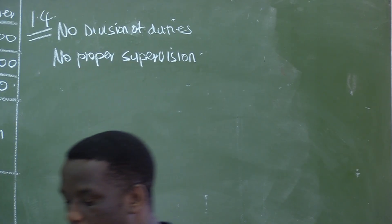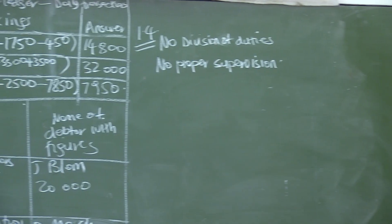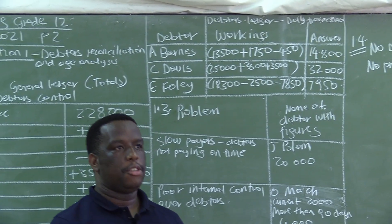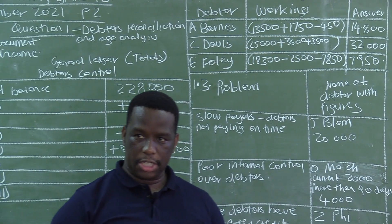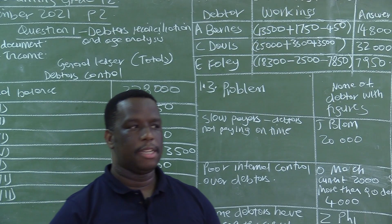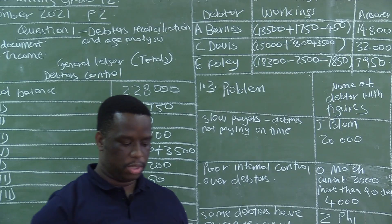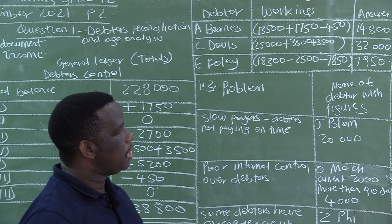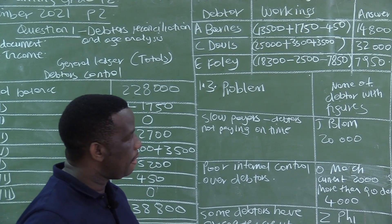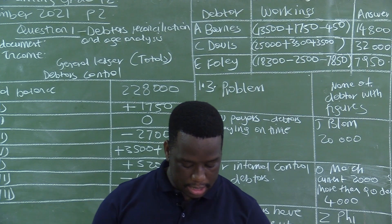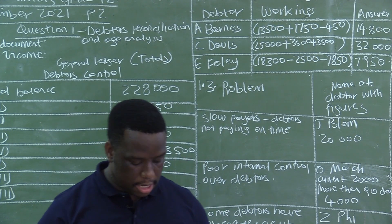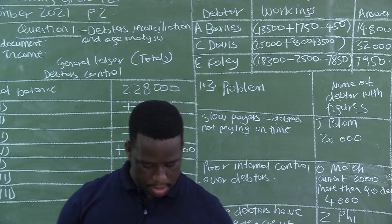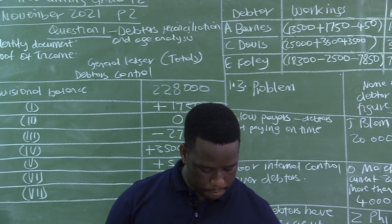In accounting, we strongly recommend division of duties. A person collecting cash should not also be responsible for banking — they should collect cash and submit it to another person to do the banking. If one person performs different but related tasks, there is potential for fraud. In Susan's case, there is no division of duties and no proper supervision, which is why the internal auditor believes this could lead to fraud. This brings us to the end of question one from the November 2021 exam, paper two.